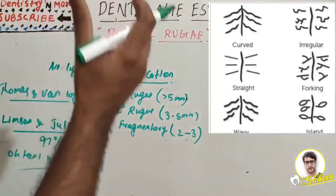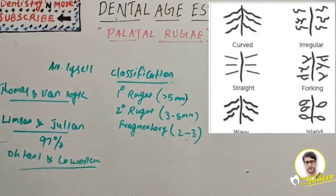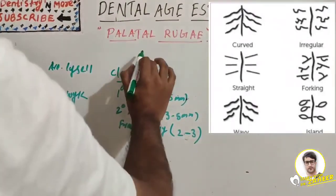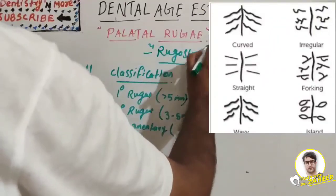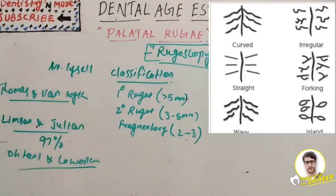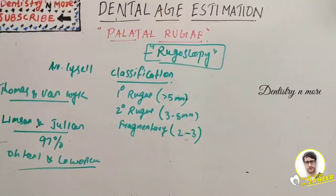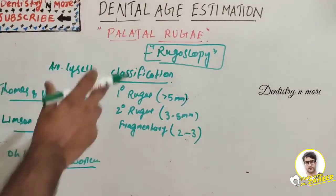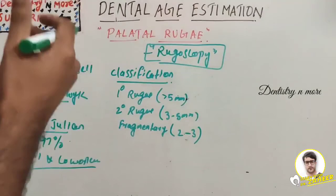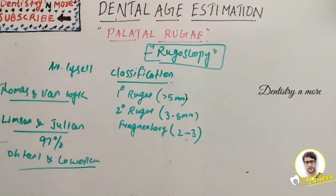Palatal rugae patterns can be curved, wavy, straight, or unconnected. This entire process of analysis is known as rugoscopy — that is, identification using palatal rugae. In rugoscopy, we examine the palatal rugae for their position, length, shape, direction, and unification in order to establish or identify a person.